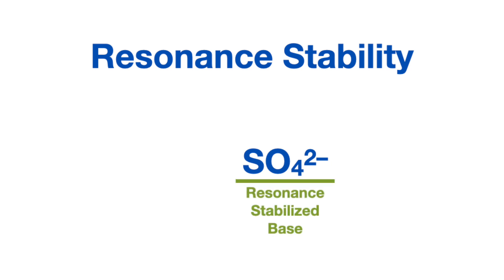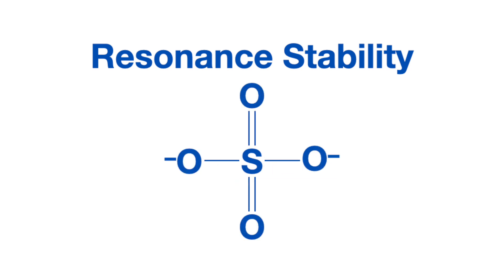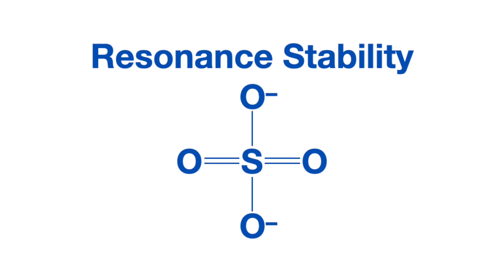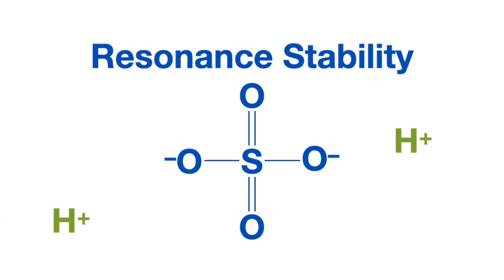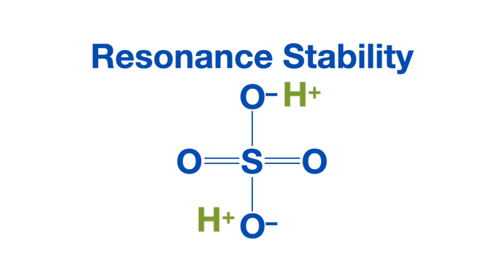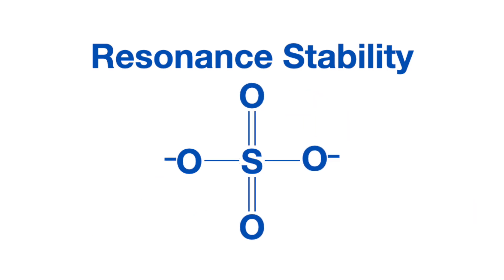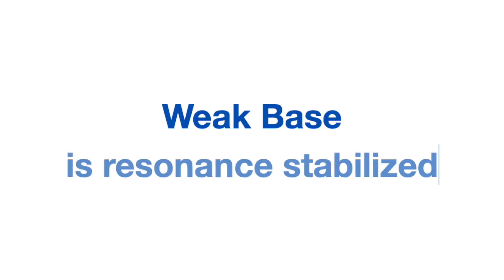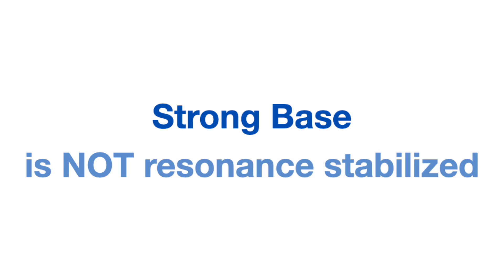Resonance stability is a final factor to consider when determining base strength. Resonance-stabilized bases experience mobility of pi electrons, meaning the movement of lone pairs and double-bonded electrons, so the negative charge where hydrogen would usually attach is never in one place. At one moment the oxygen can be negatively charged and a hydrogen can approach, but in the very next moment the negative charge can become a double bond and the hydrogen can't bind. This is what stabilizes the base and prevents it from accepting a proton, making it a weak base. So a strong base is one that is not resonance stabilized.